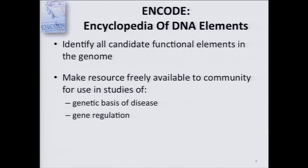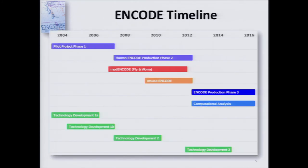ENCODE — the Encyclopedia of DNA Elements — is such a project run by NHGRI. The twin goals of ENCODE are to identify all of the candidate functional elements in the genome, which is an aspirational goal, and to share this catalog as a freely available resource. This is available to anybody with internet access — no login, no fee. Taxpayers have already paid for this, and it is very useful for the study of the genetic basis of human disease and gene regulation.